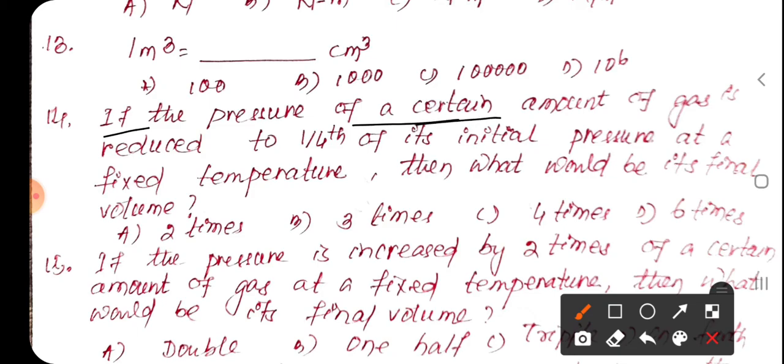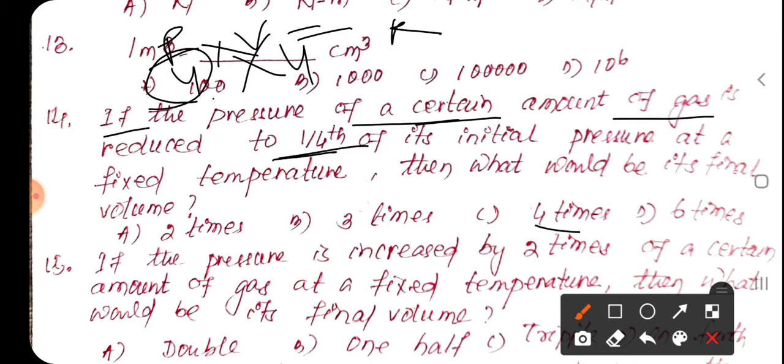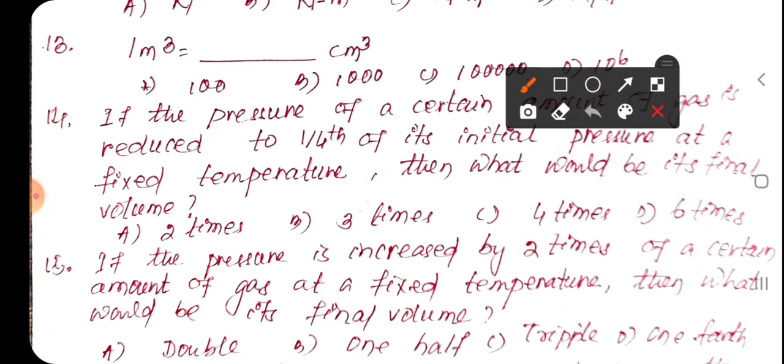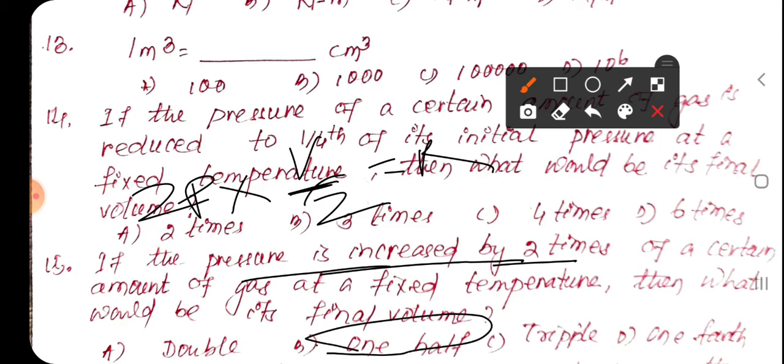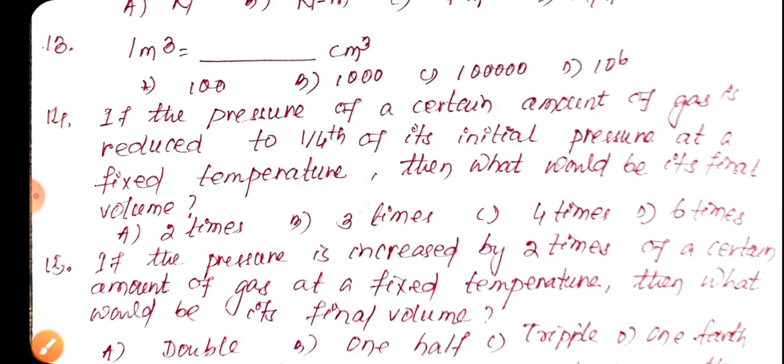Question 14: The pressure of a certain amount of gas is reduced by one-fourth. We use the relationship between P1, V1, P2, and V2 to solve this question.